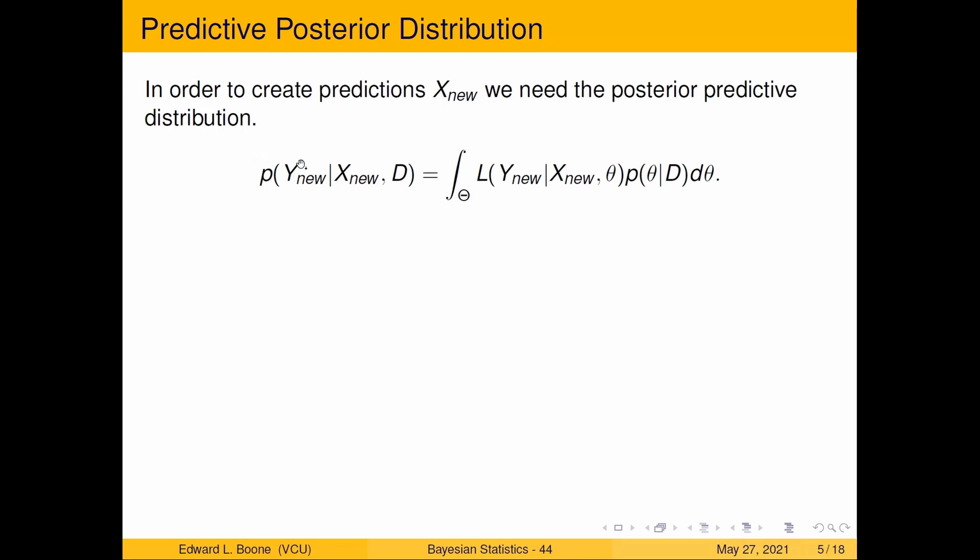It's the integral of the likelihood of a new value under this parameter and under this new x value, averaged across all of the posterior distribution. You're going to say, how do I do this? Well, we have this distribution already, so averaging across it is actually not that difficult. We just take our samples and plug them in.